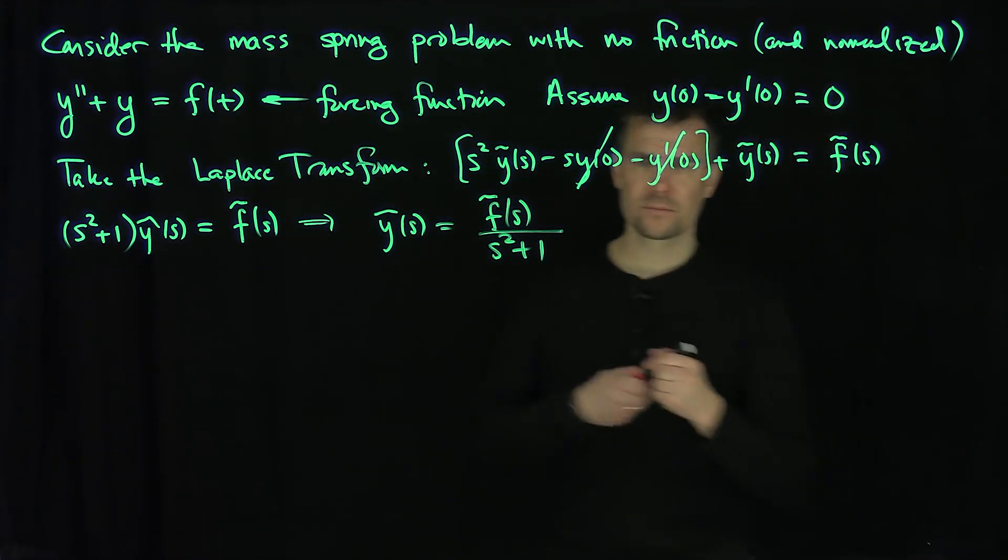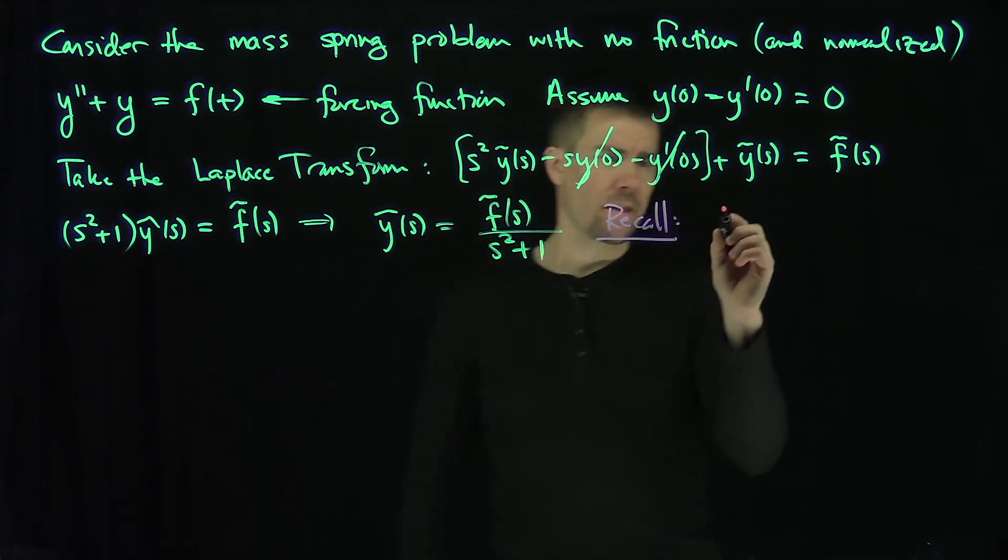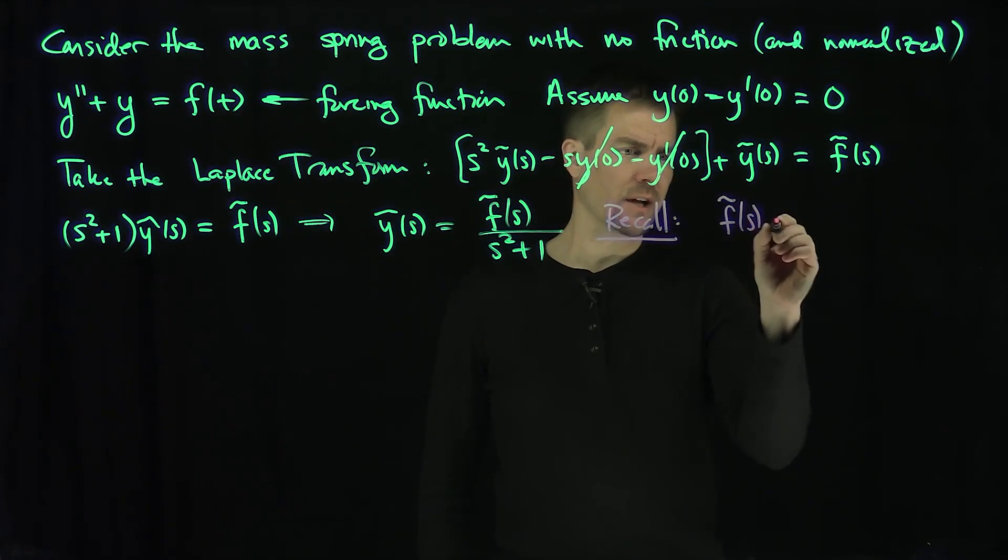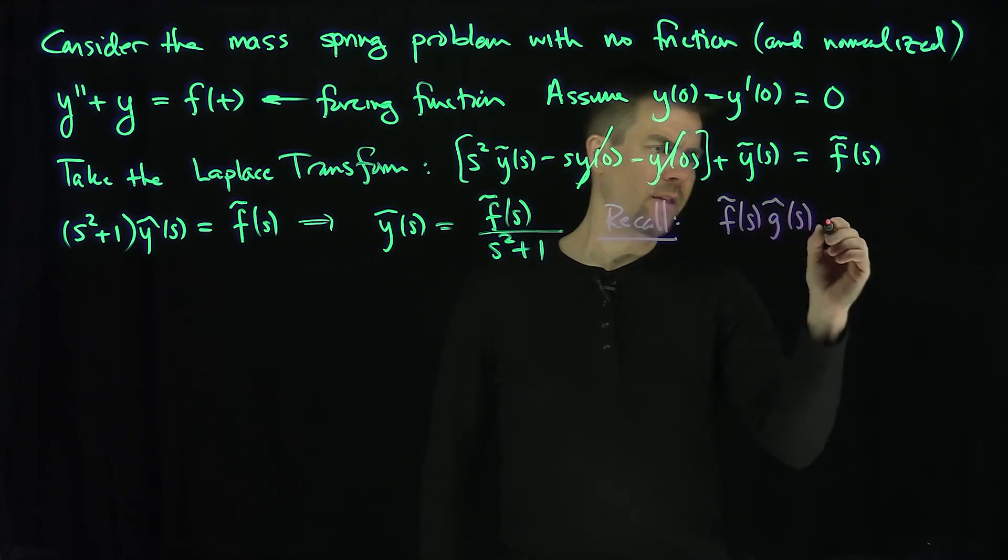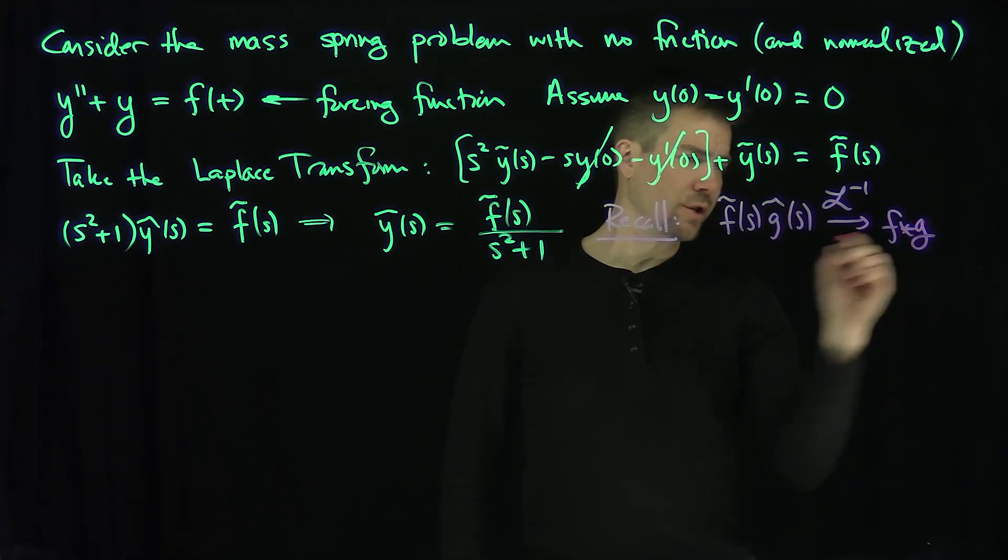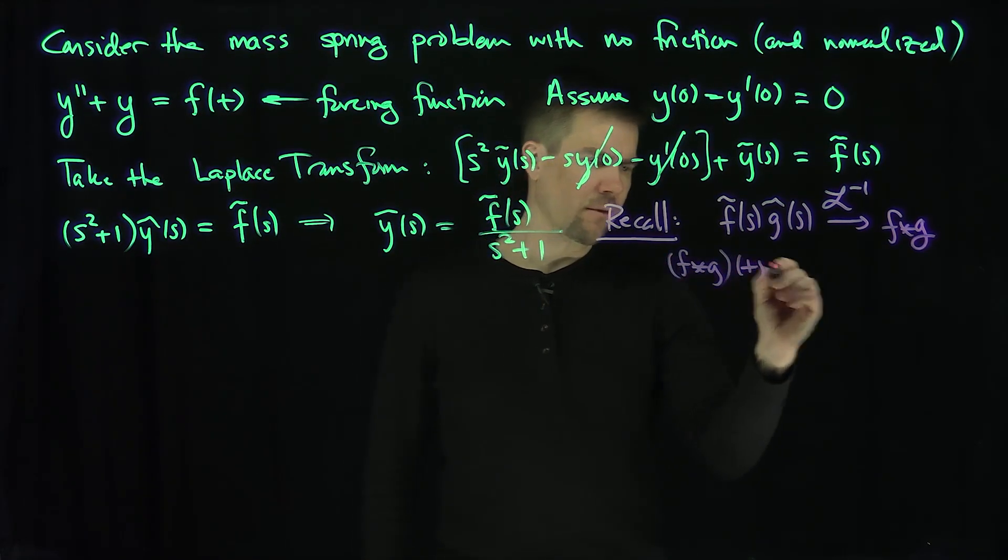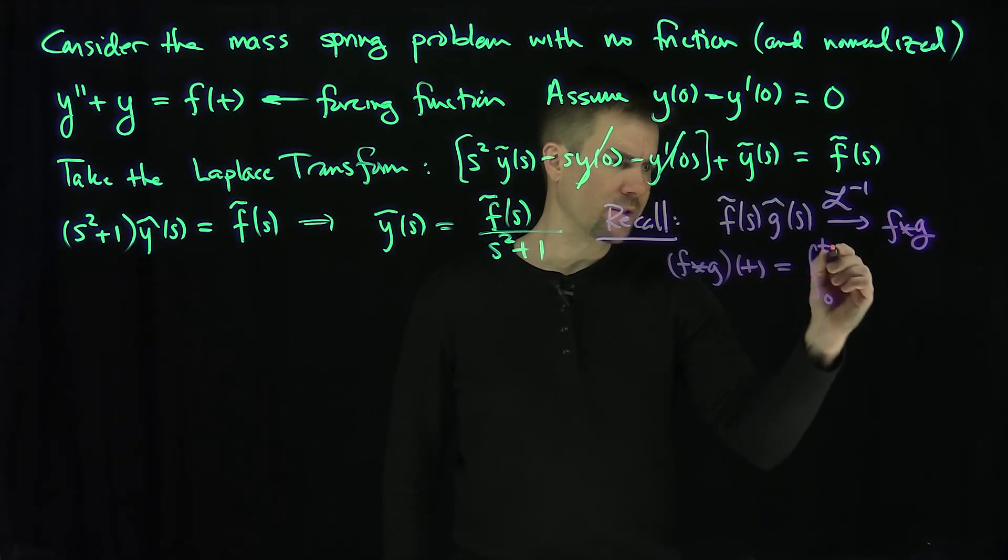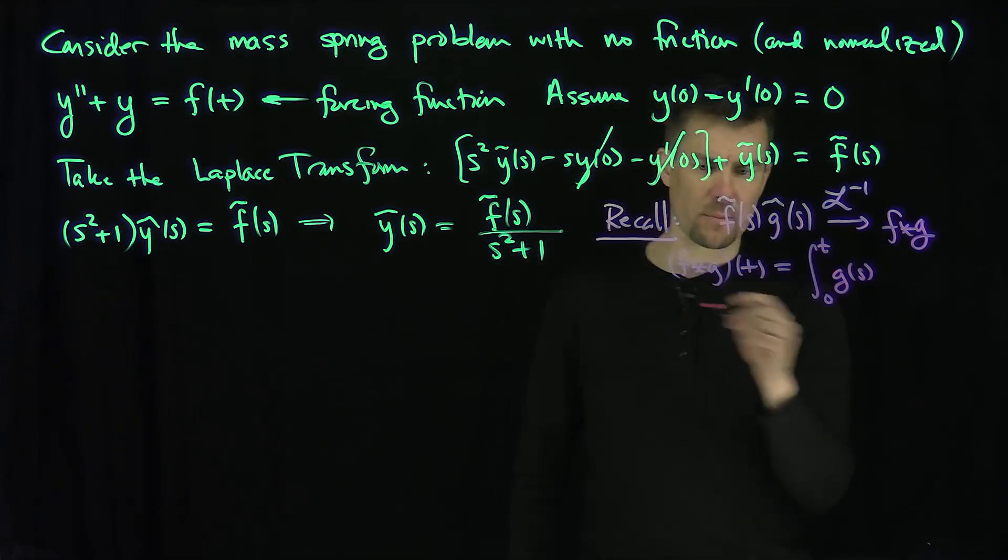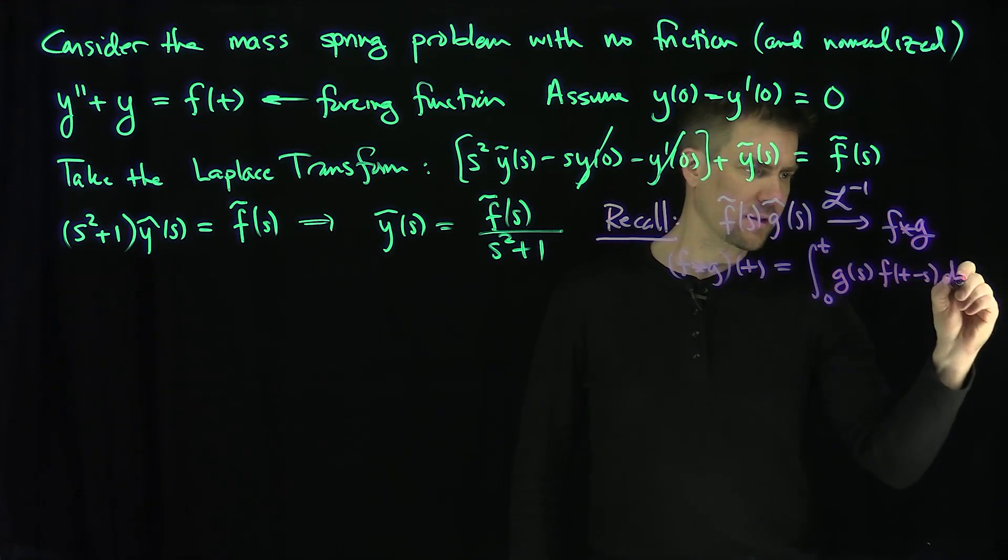So let's recall that if I have f tilde of s times g tilde of s, that the inverse Laplace transform of this thing will just be f convolution g, where f convolution g of t, for the Laplace transform, is the integral from 0 to t of g of s, it doesn't really matter what order, because it's a commutative operation, g of s, and then f of t minus s, ds.